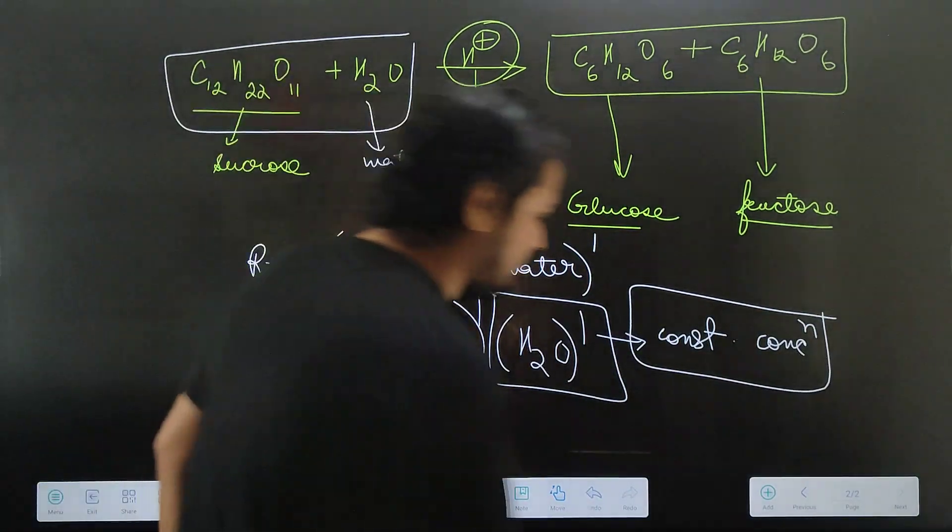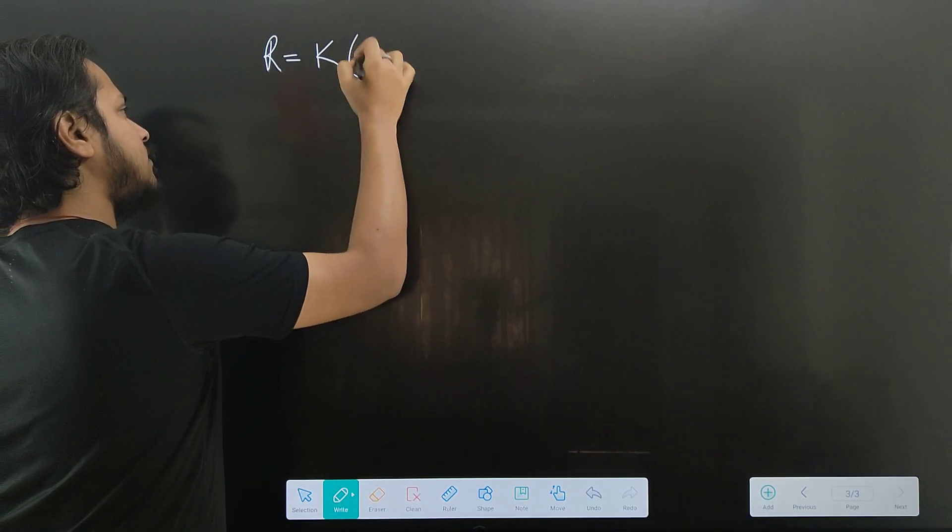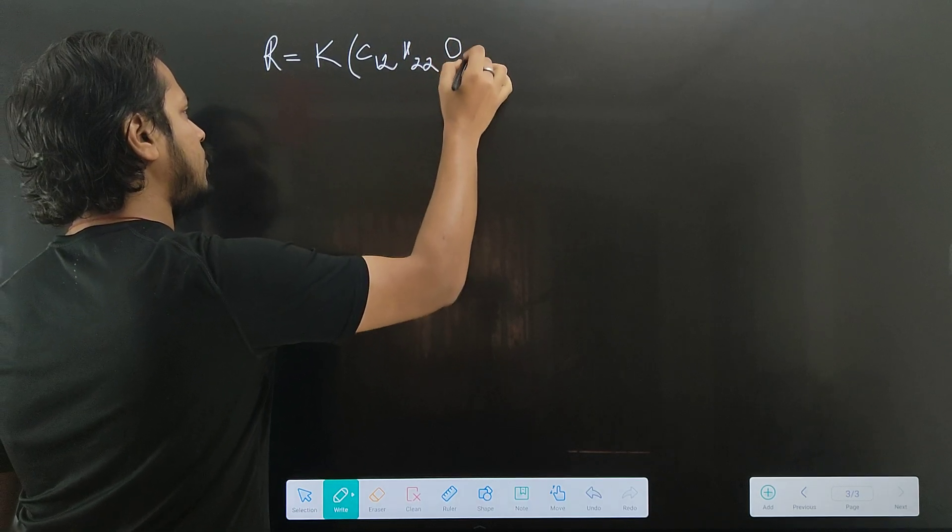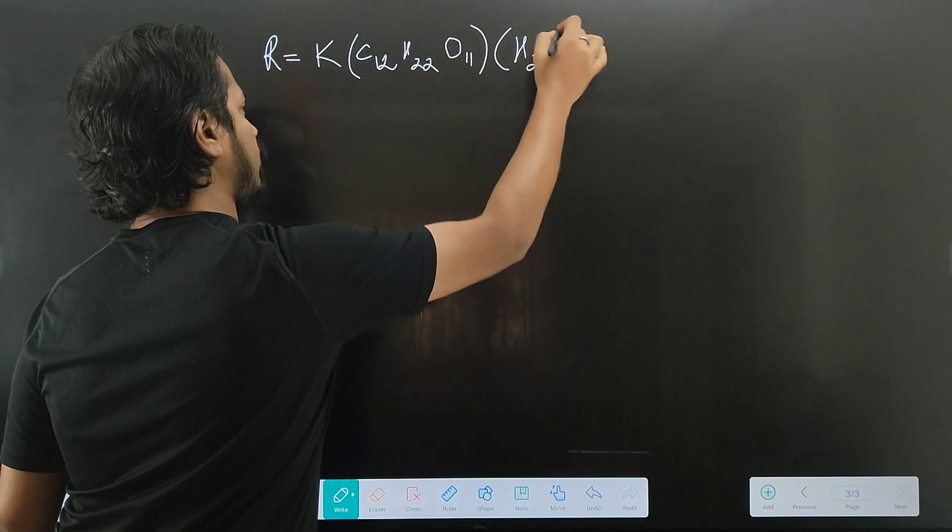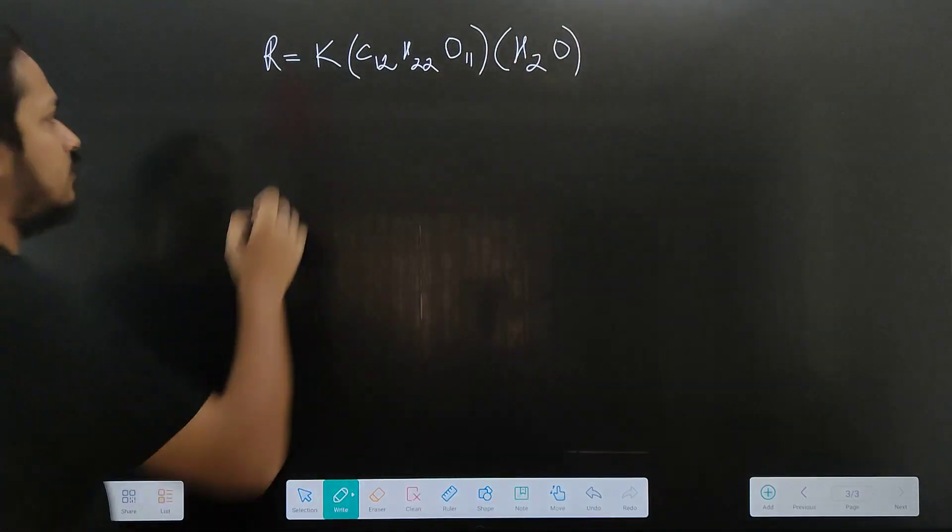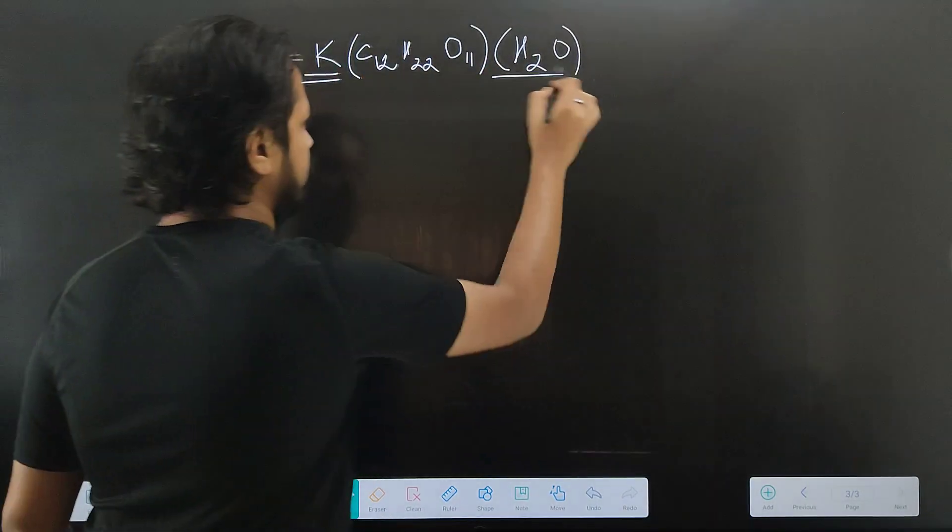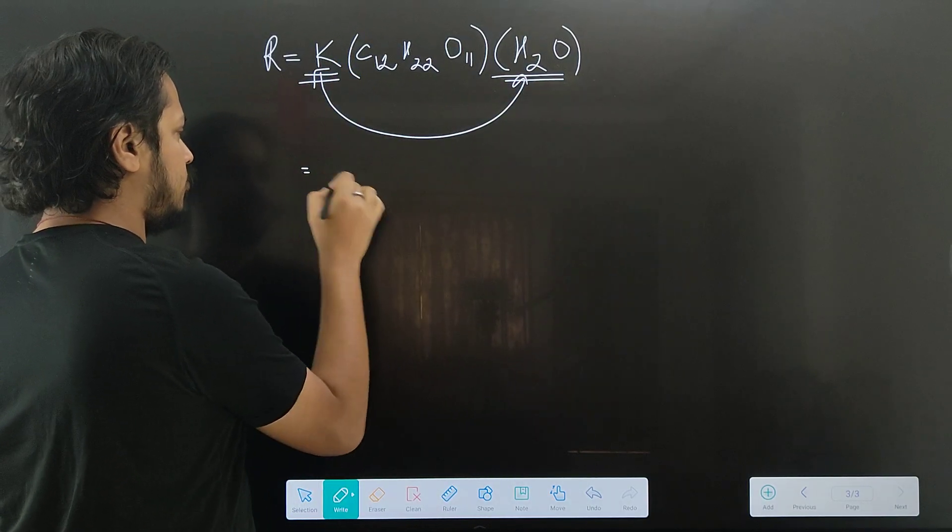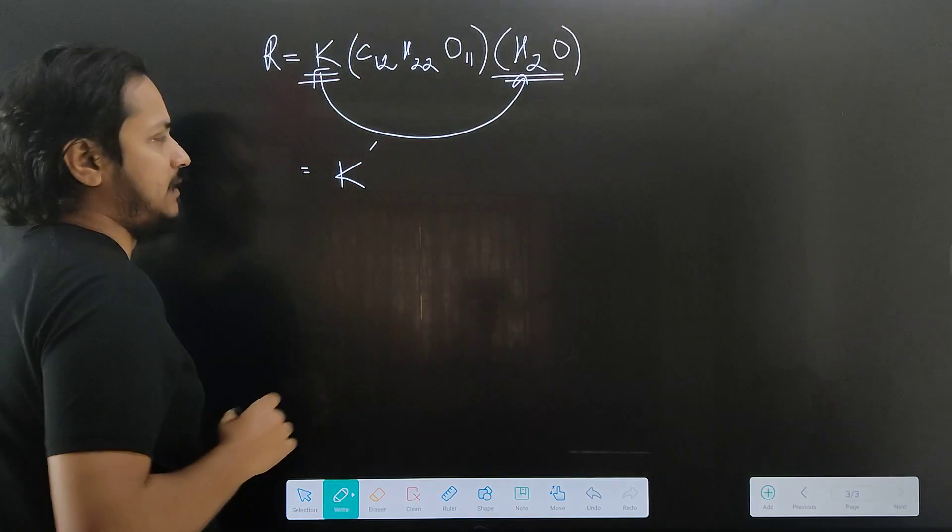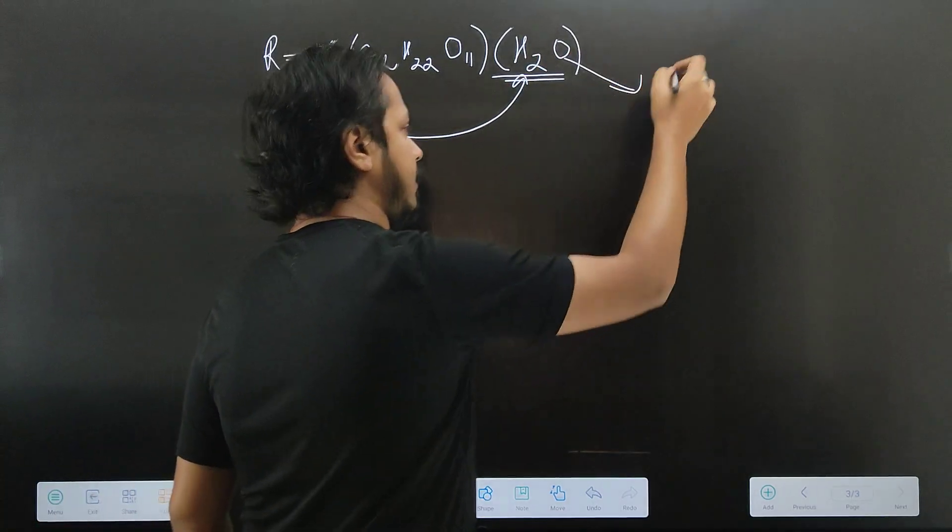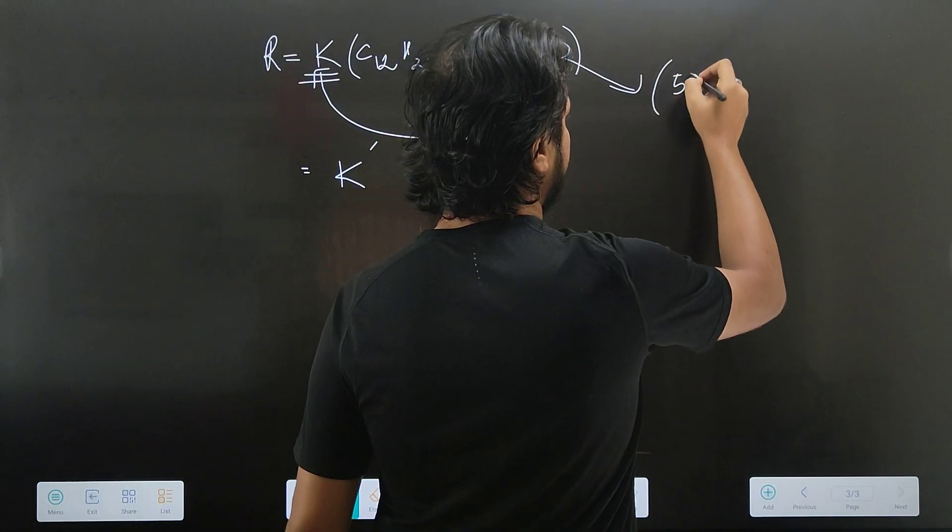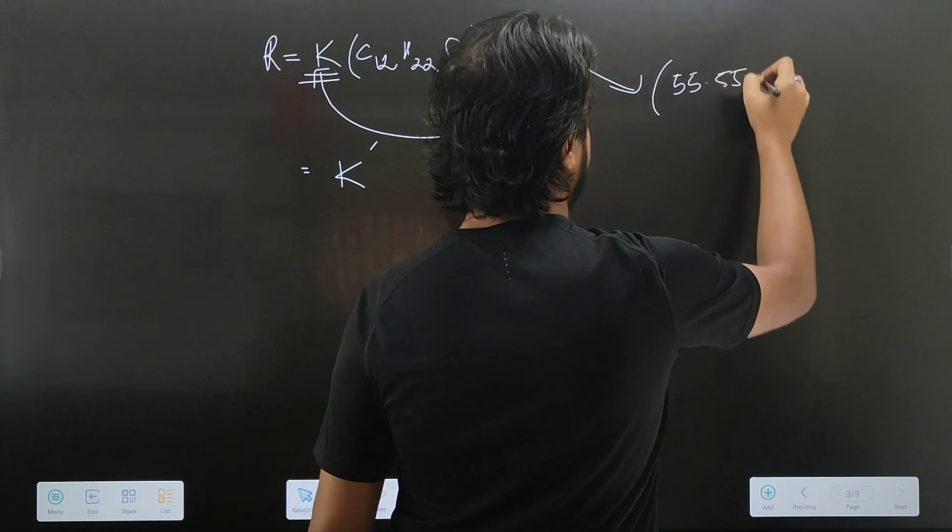So constant concentration remains constant. Rate equals K times C12H22O11 times water. K and water, both being constants, multiply to give a new constant. Water's concentration is constant at 55.55 molarity.